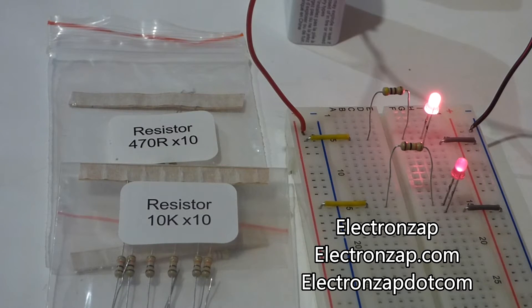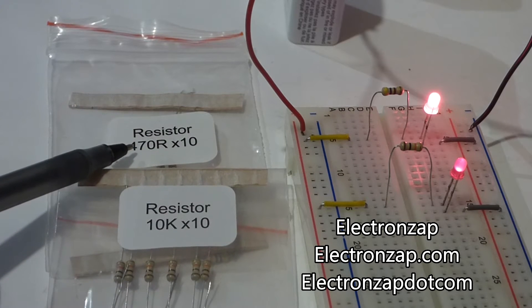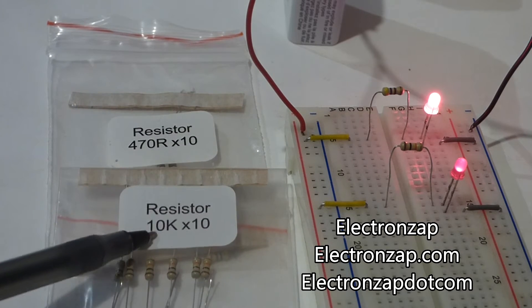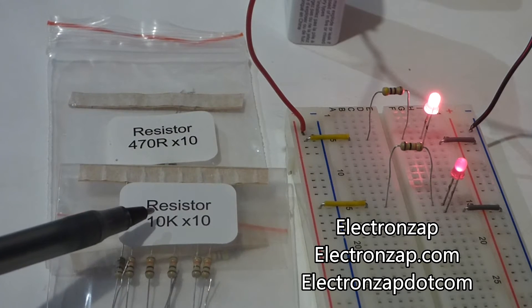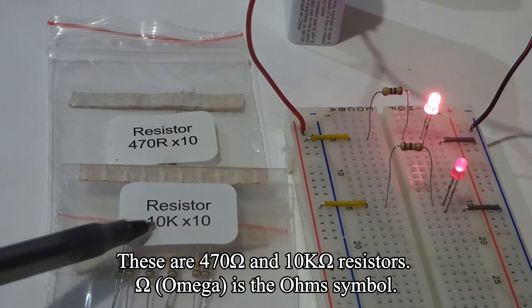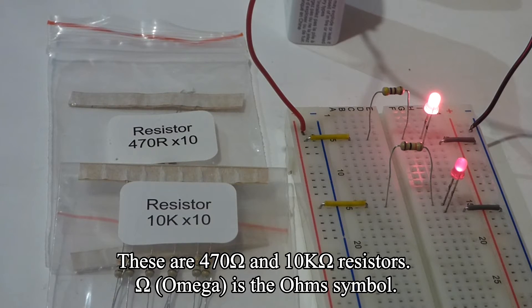The main job of a resistor is to reduce current and the amount of current it reduces depends on the value in ohms. This is ohms, usually there's an omega symbol but this packaging doesn't have that.